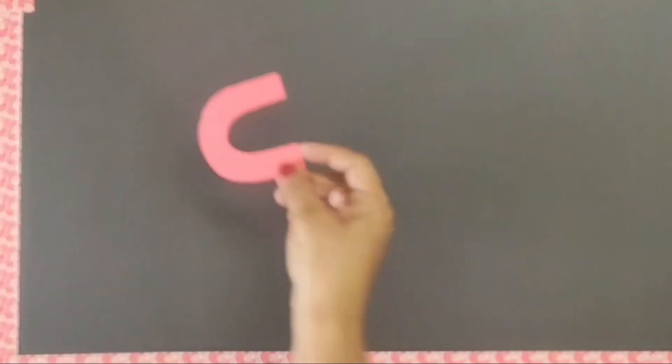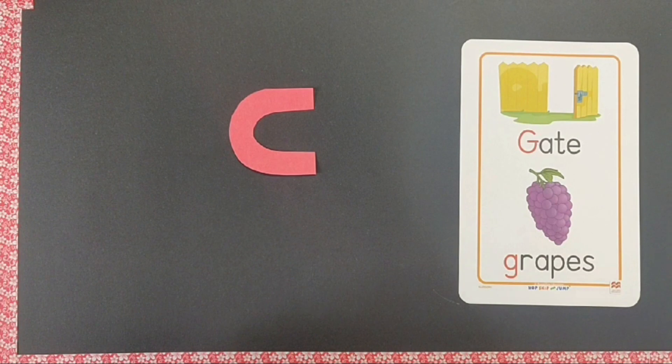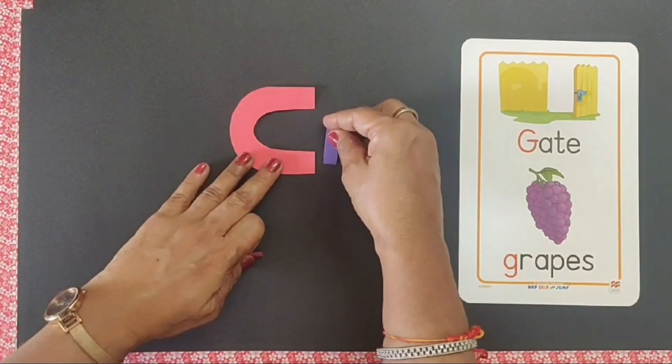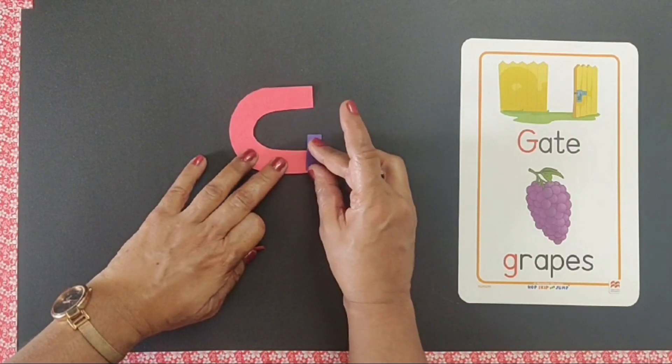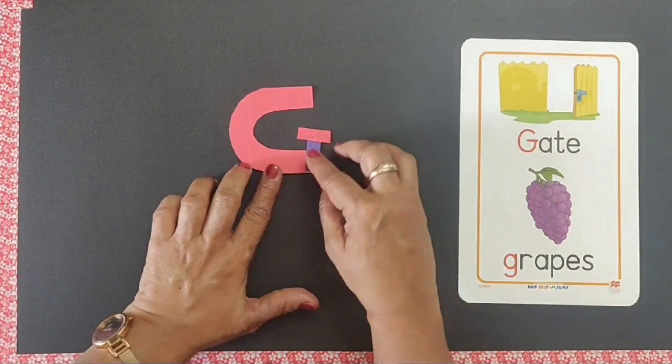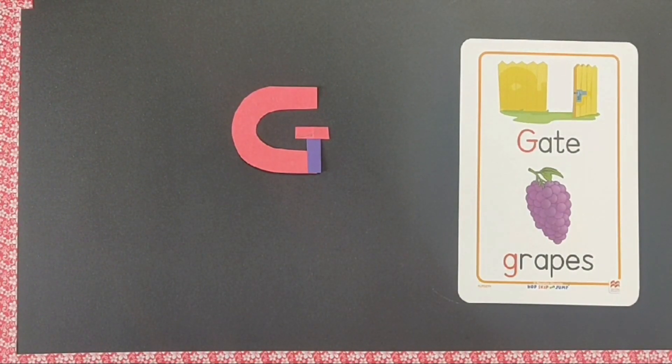Now take a bigger curve, two small ones. Put it like this and one like this. So we get G. Say G says guh, G for gate.